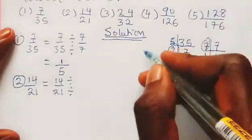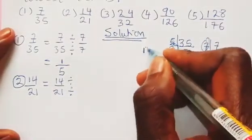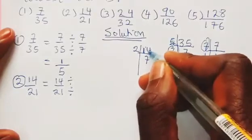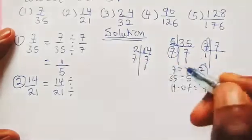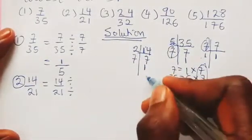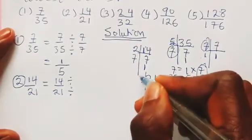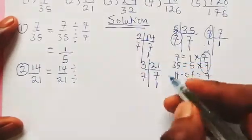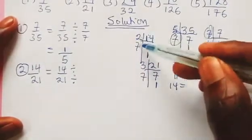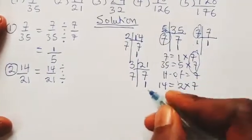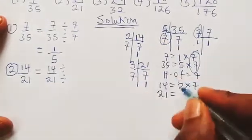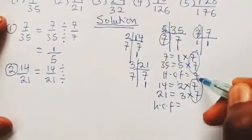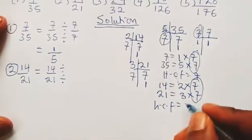We take our 14 and divide by 2: 2 × 7 = 14, so 14 gives us 2 then 7 then 1. For 21, we divide by 3: 3 goes into 21 to give 7, and 7 goes into 7 to give 1. So 14 = 2 × 7 and 21 = 3 × 7. The HCF is 7, the number appearing in both prime factorizations.